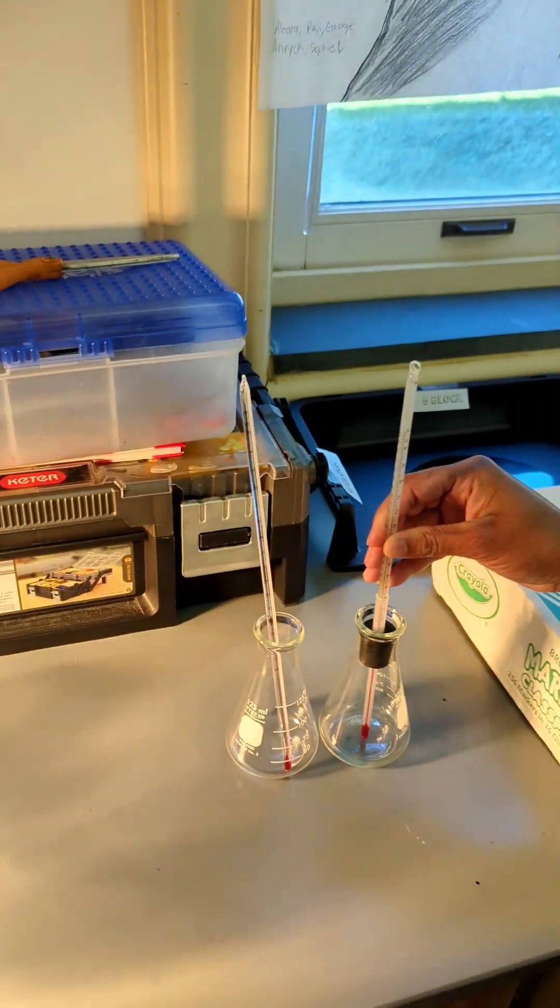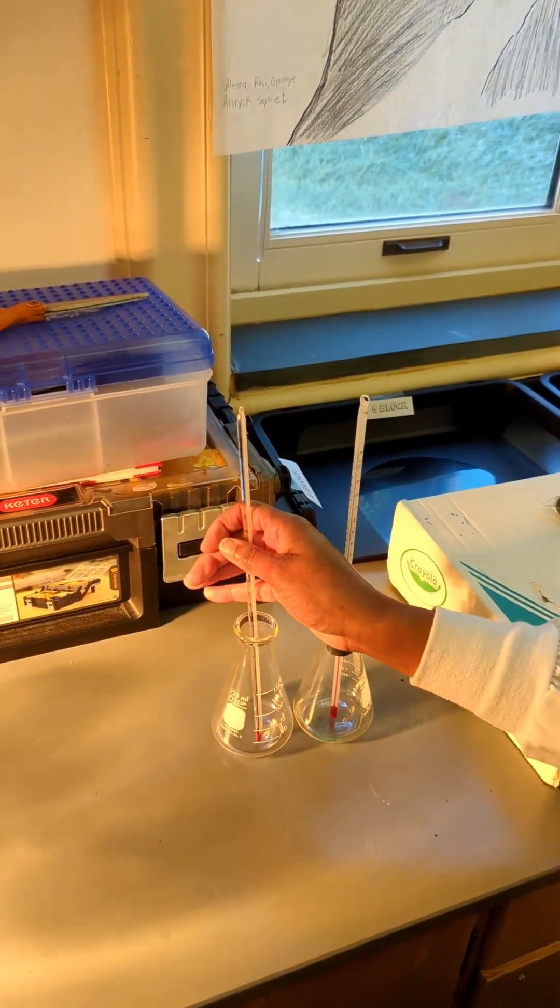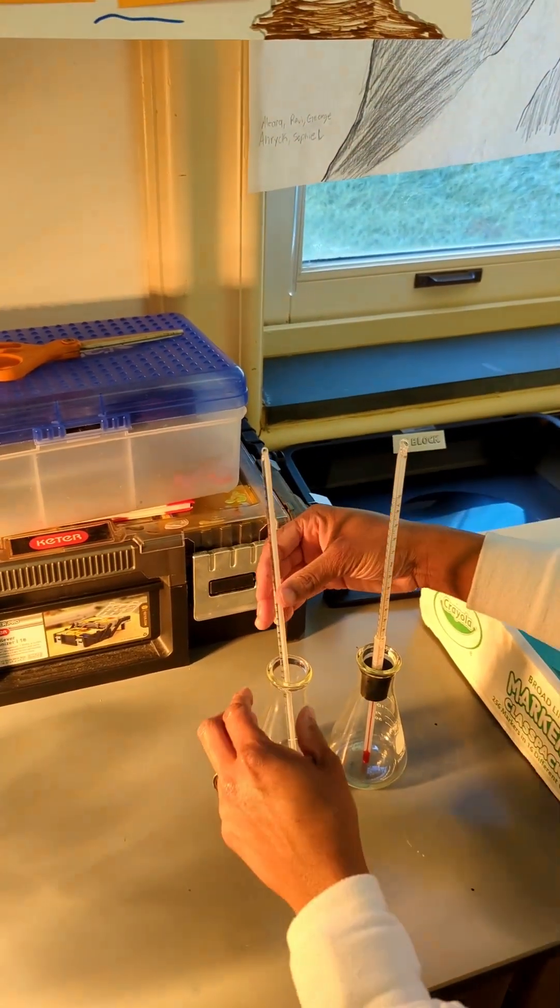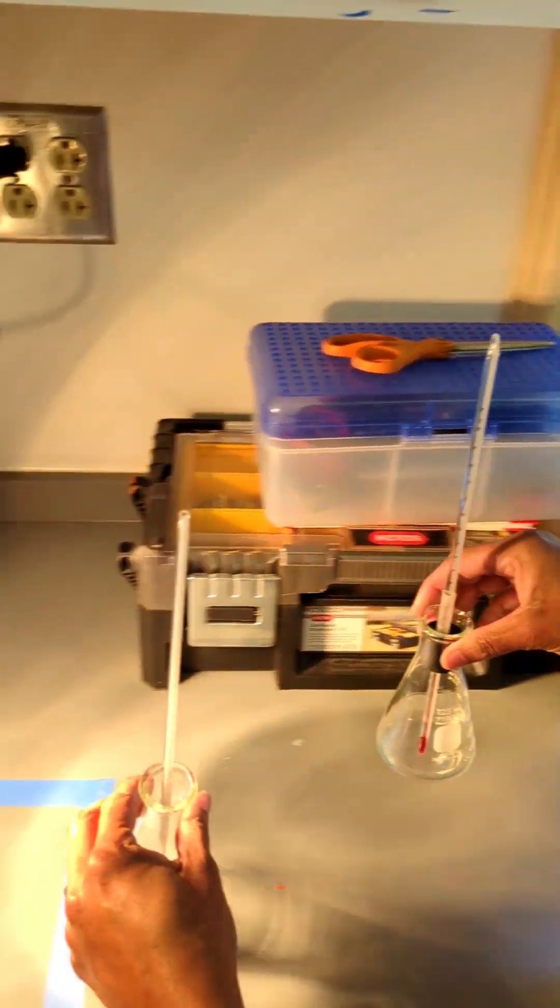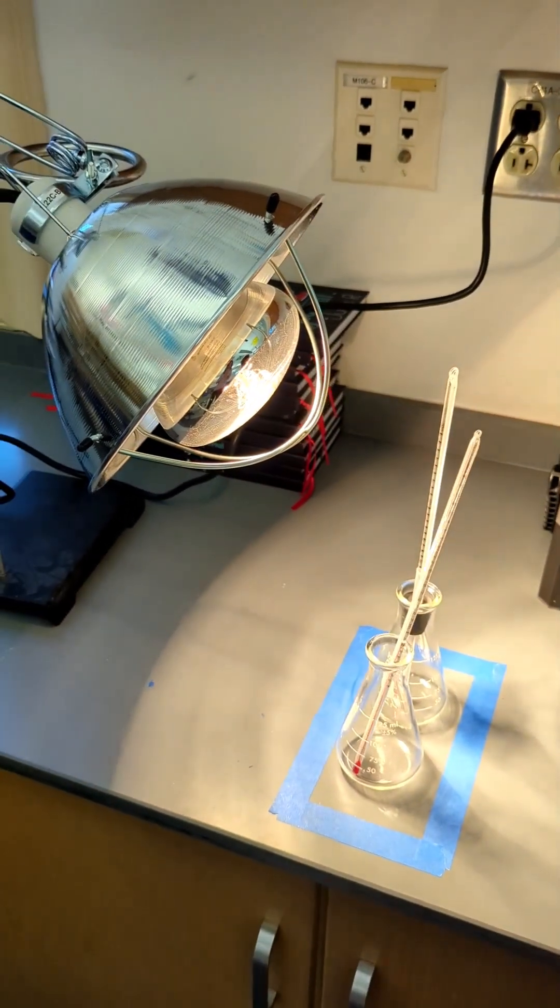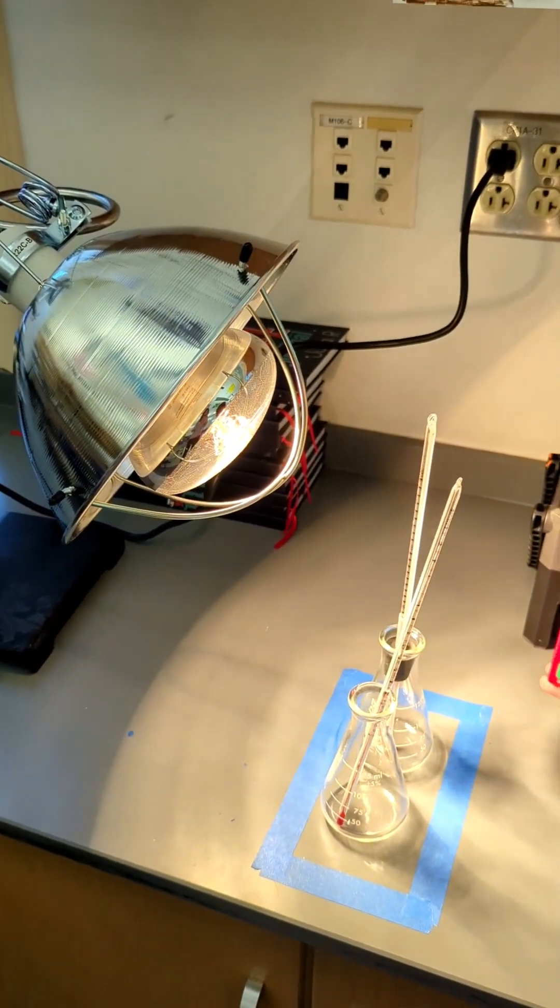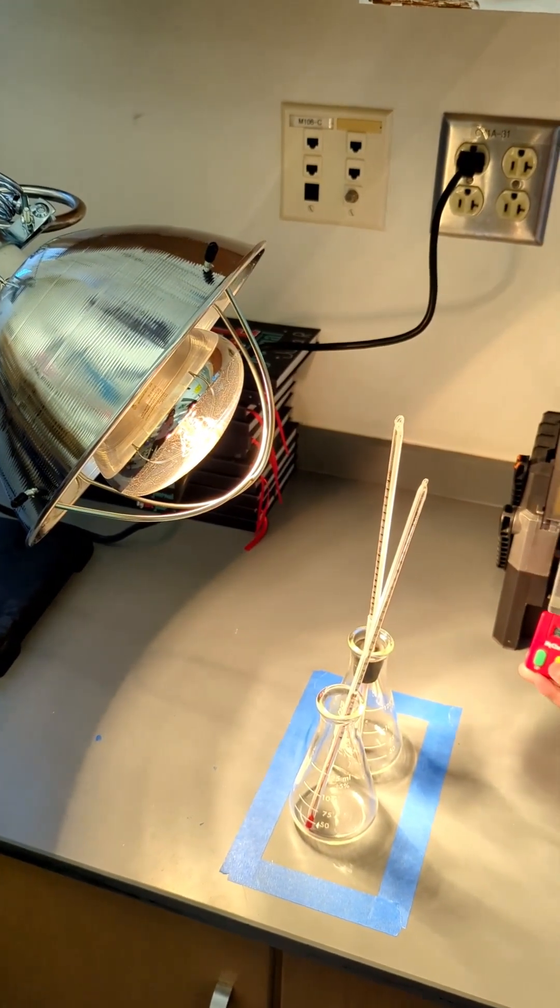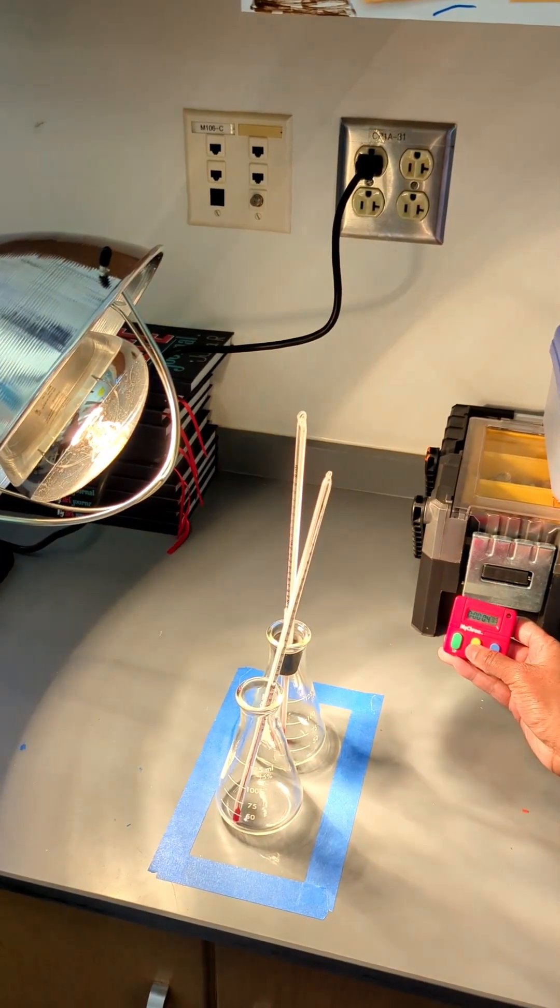All right, we want to make sure that our thermometers are touching the bottom of the flask the same for each one. So let's go ahead and place these thermometers under the light and then we are going to get our stopwatch started. We're going to check this every minute for five minutes.